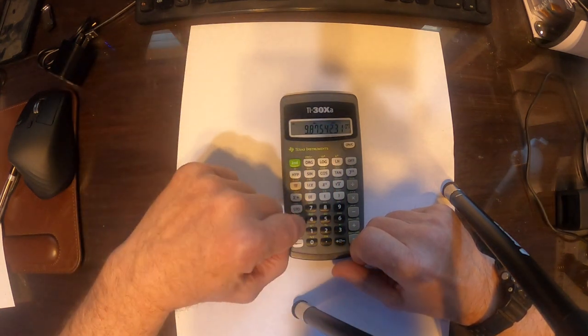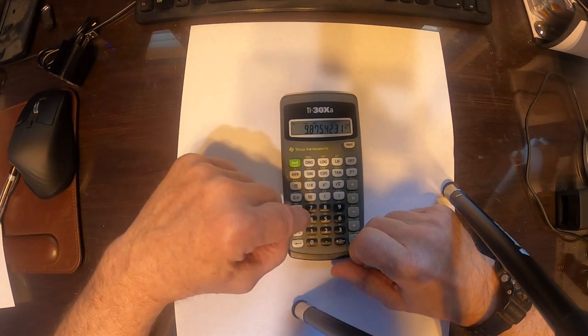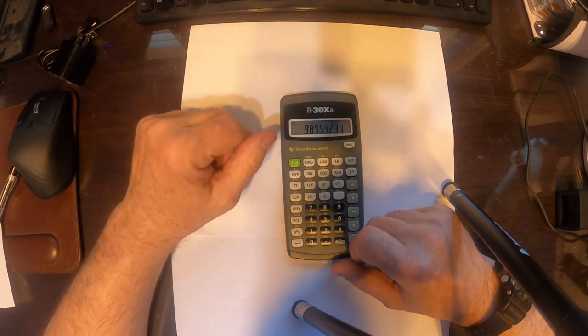If we want to go back, see that FLO there? Just press the 2nd button, and then FLO, and it's back in decimal notation.